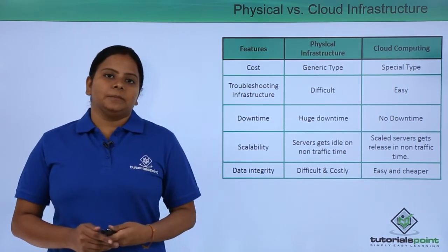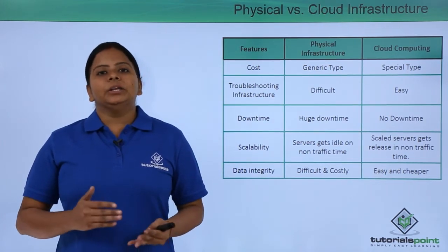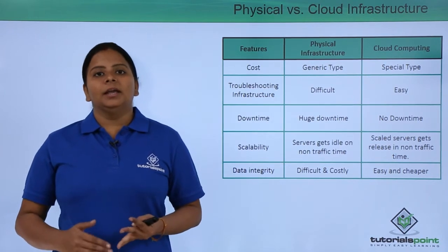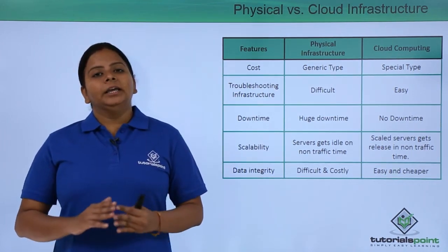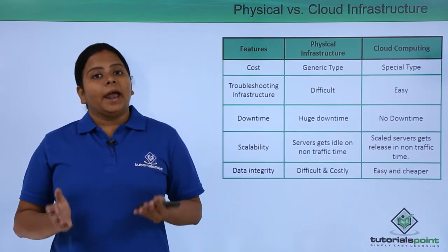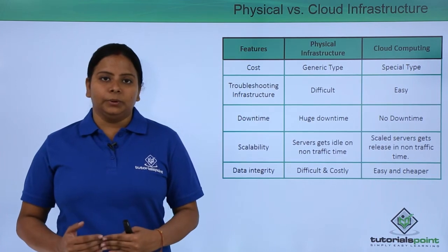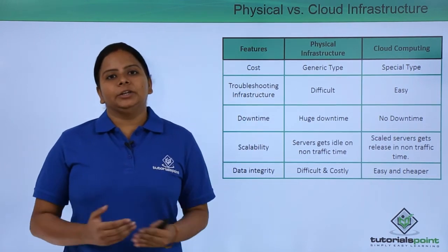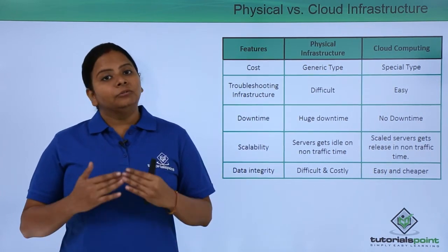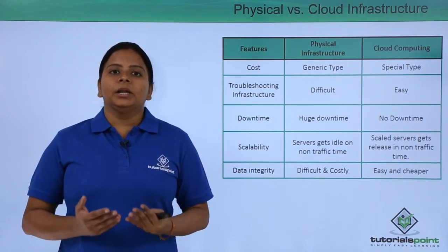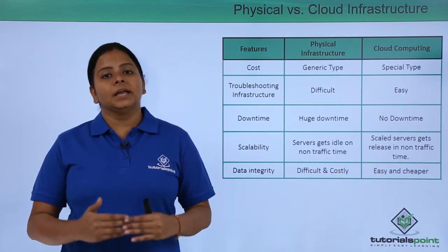Regarding troubleshooting infrastructure — in a physical infrastructure, all the servers are at your end, so you need to maintain them through updates, security, and backups, which is difficult to manage. With a huge amount of data and users with different permissions, checking what users are accessing at all times is highly difficult. But in cloud computing, it is very easy to troubleshoot errors or unauthorized service access, because each service has different logs and portals to check which services are accessed by different users, logins, and regions.